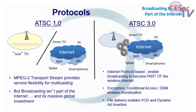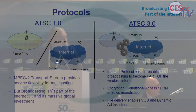So for ATSC 3, we decided not to do that again. Let's make broadcasting effectively part of the internet — use internet protocol transport. One key reason was the ability to integrate broadband hybrid things and make it part of the internet, but also to allow it to evolve at the speed of the internet. Things on the internet evolve very quickly. Broadcasting in the past had always been a very slow, plodding type of evolution. All kinds of new things — encryption, conditional access, DRM, monetization — are big aspects for the future of broadcasting.